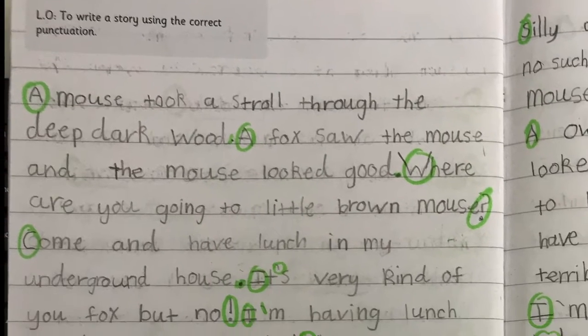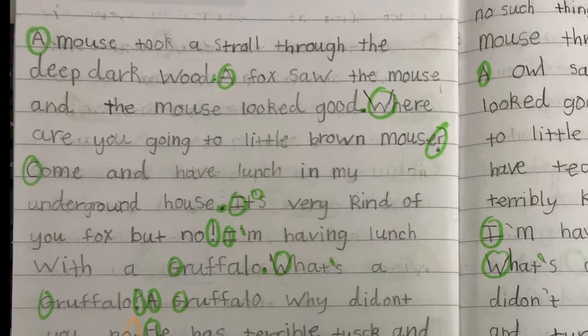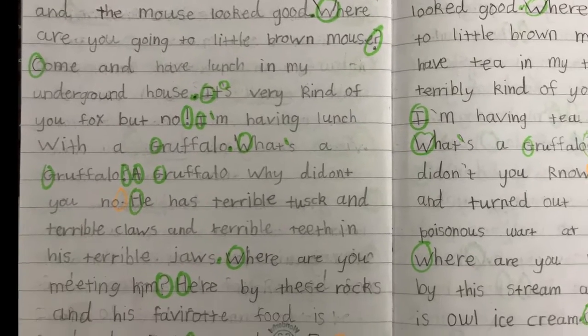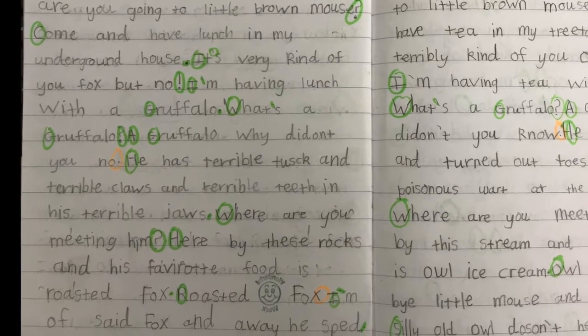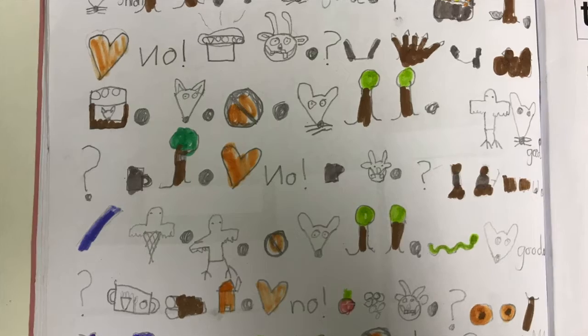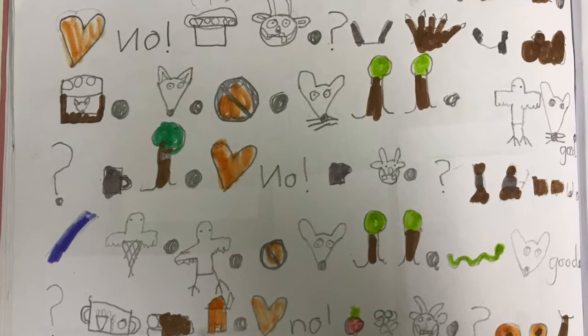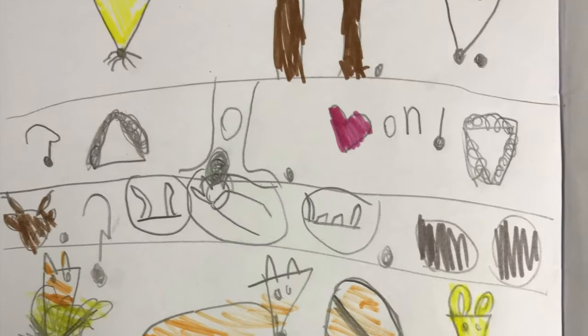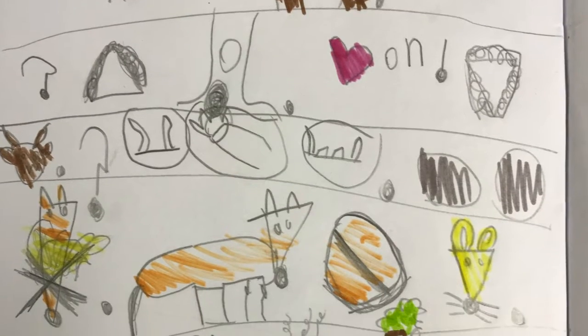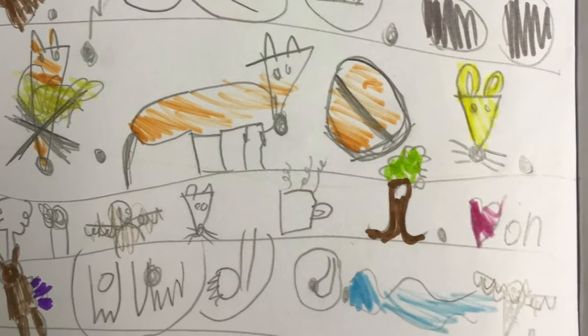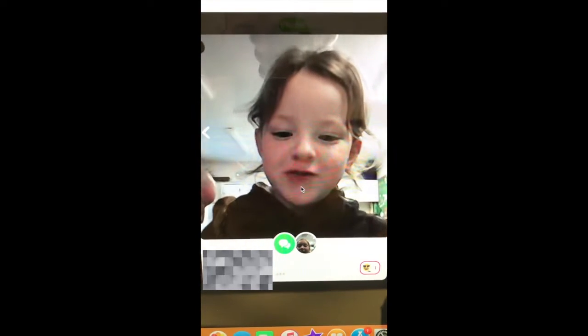The next step was for the children to write out the original story using exclamation marks, question marks, and rhyming words. To support this, the children made their own story maps and retold the story using Flipgrid in Microsoft Teams.